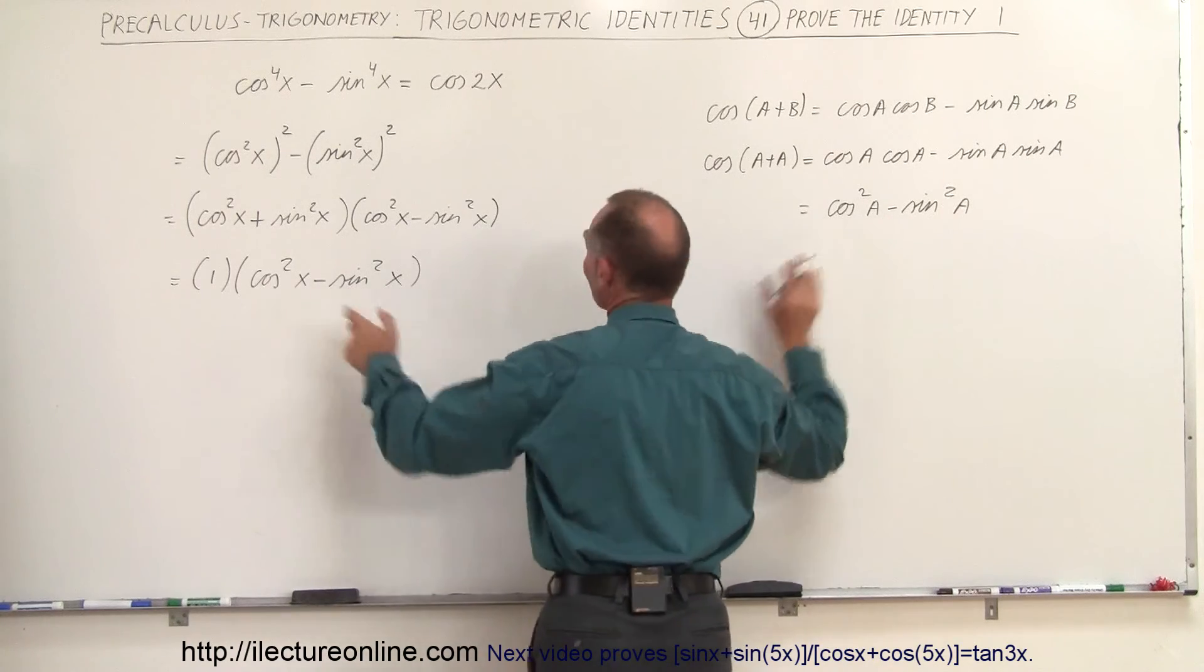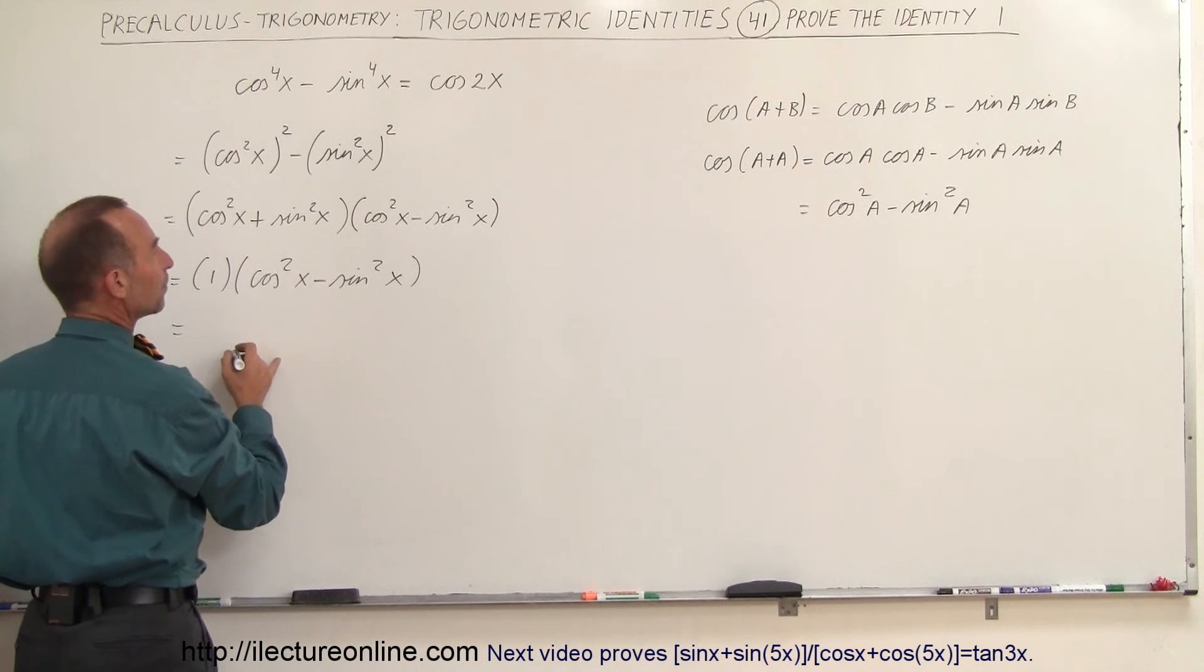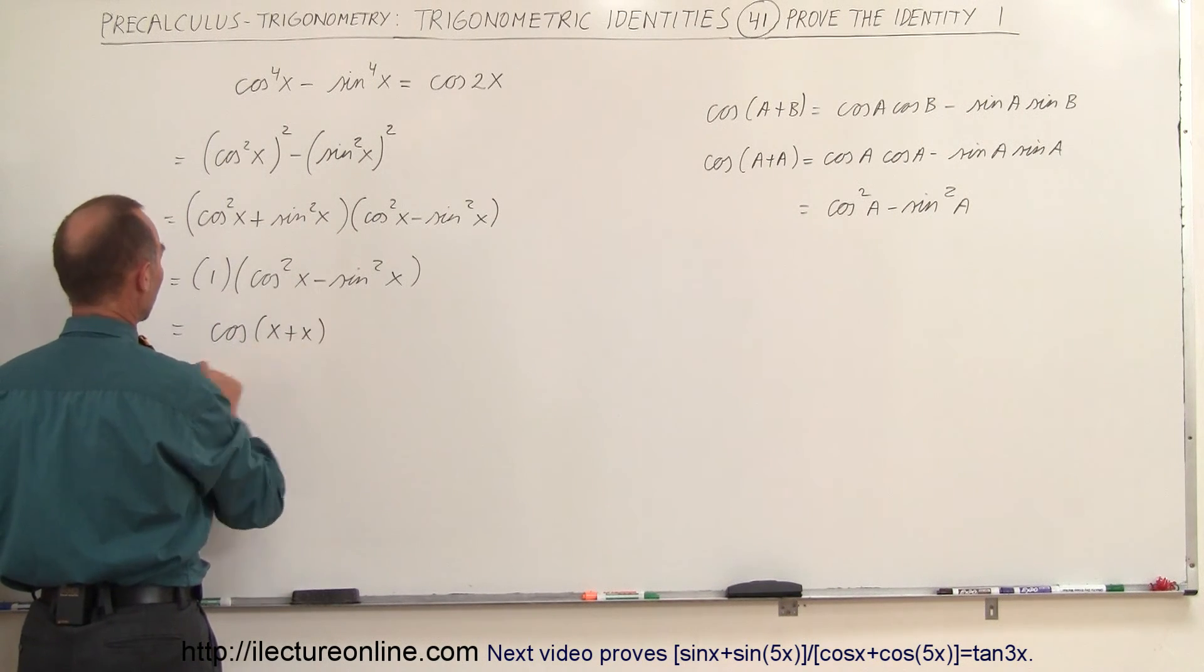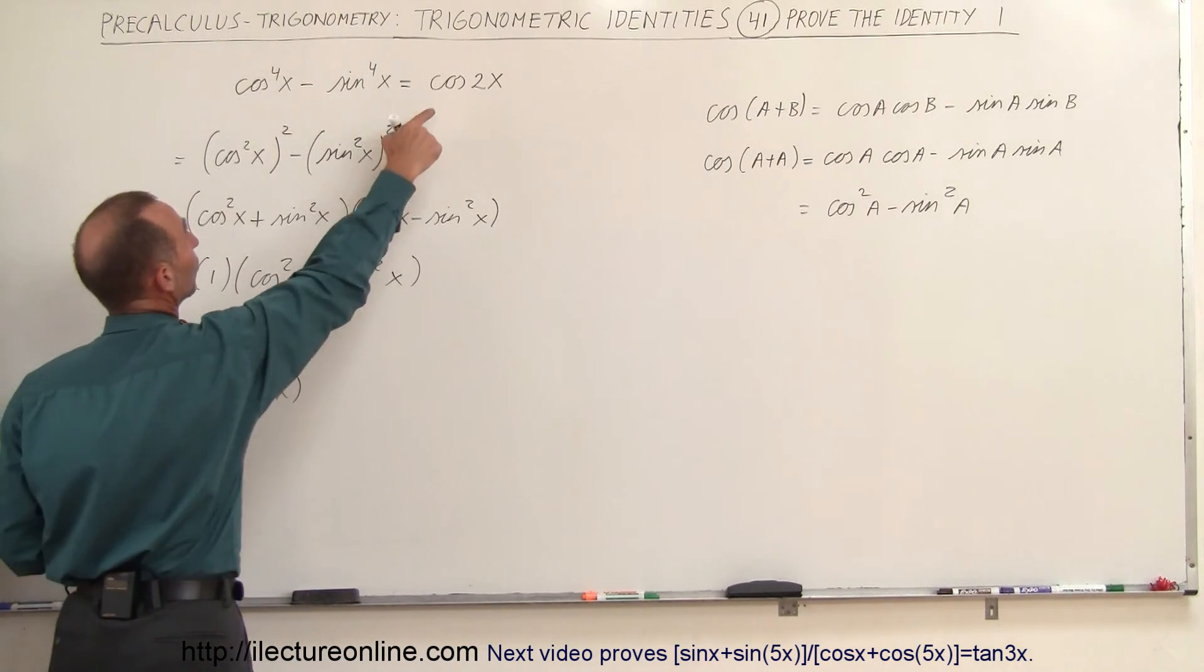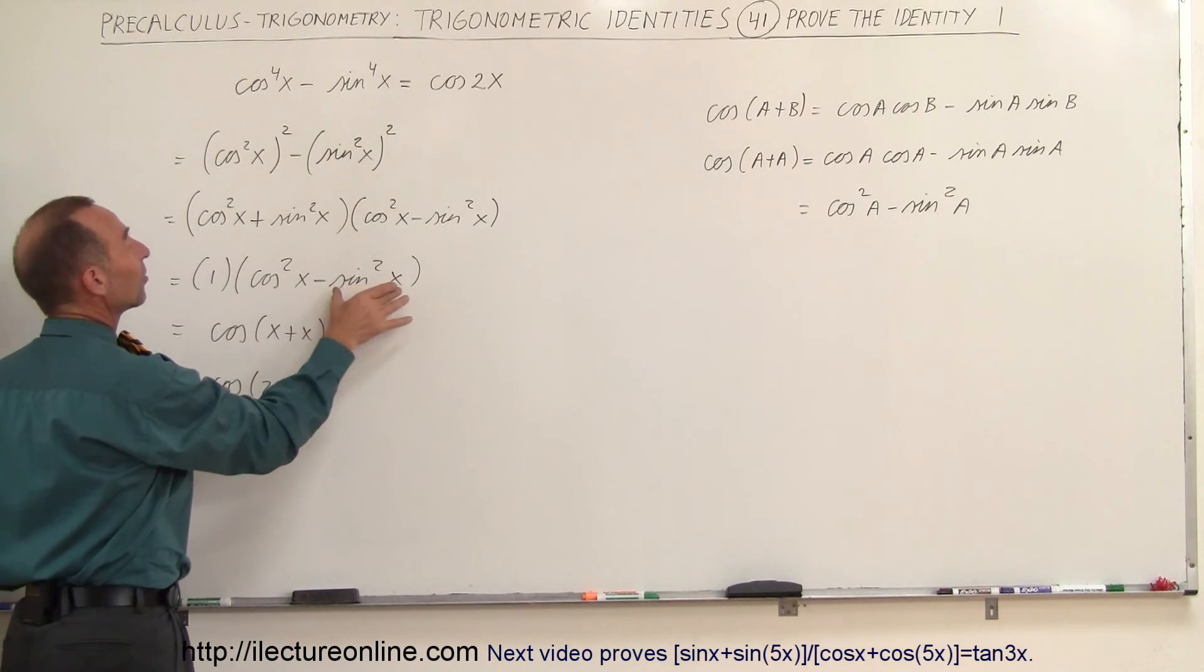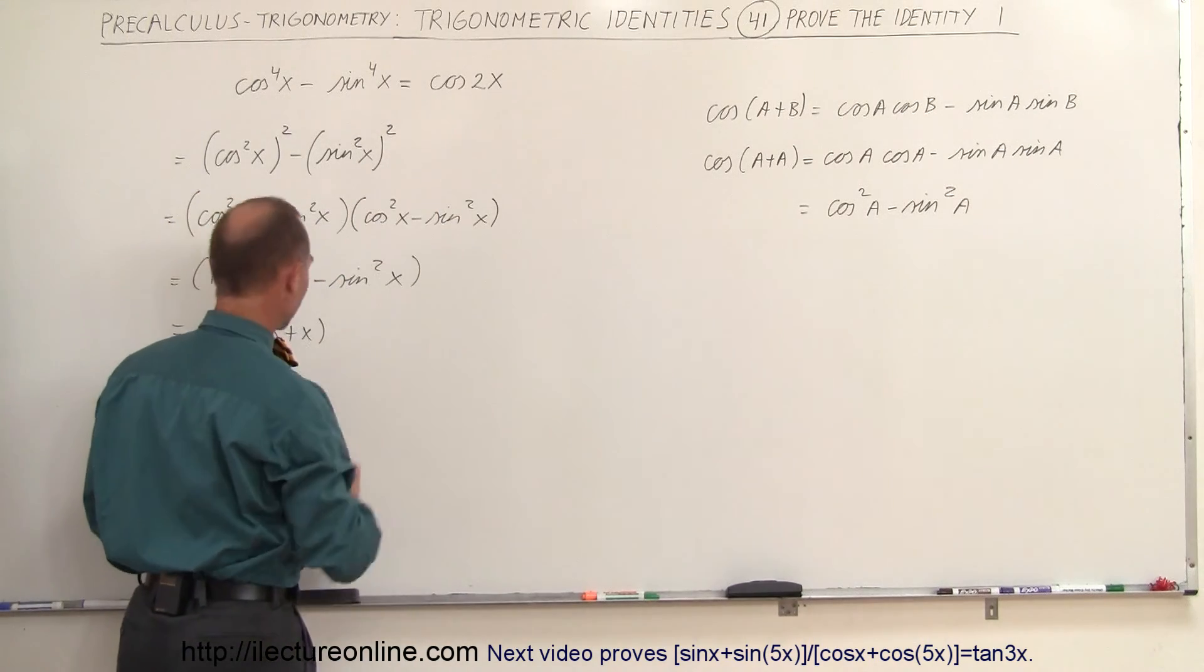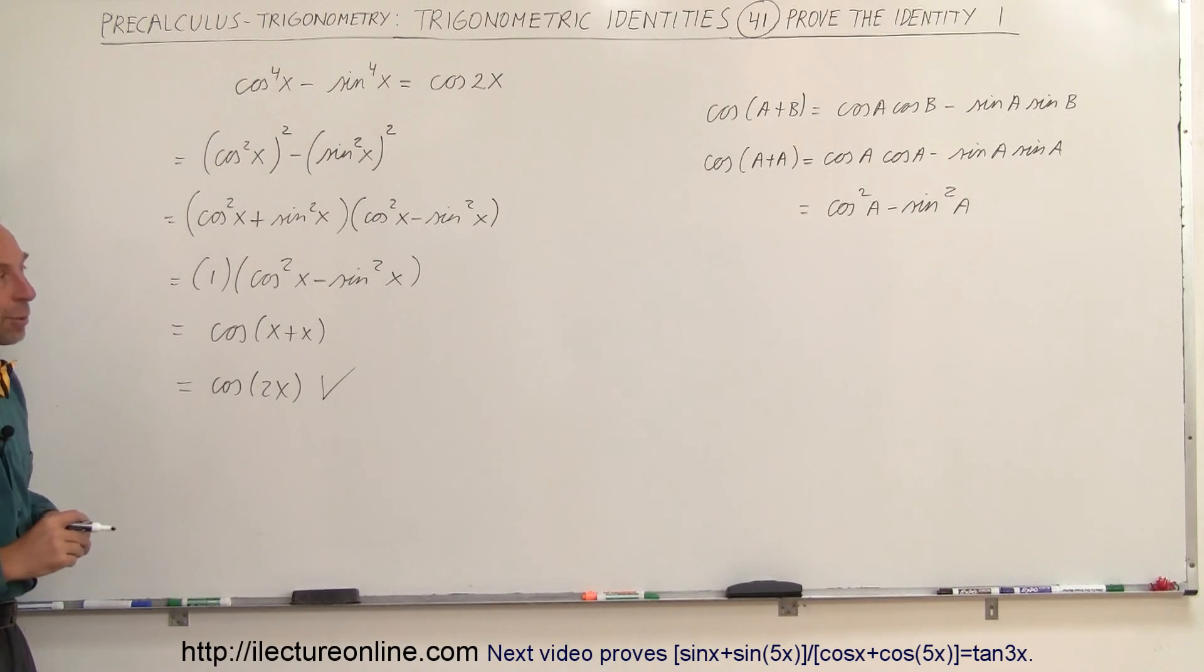So that means this can be written as the cosine of x plus x, which of course is equal to the cosine of 2x, which is what I have over there. In other words, the cosine squared of x minus the sine squared of x is indeed equal to the cosine of 2x. So we've proven this identity. That's how we do that.